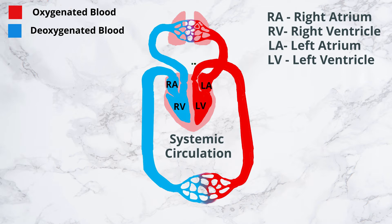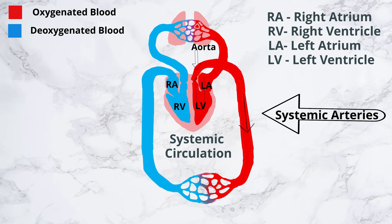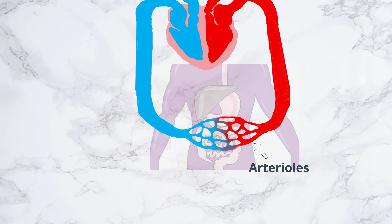First, let us start with systemic circulation. The left side of the heart is the pump for the systemic circulation. It receives bright red oxygen-rich blood from the lungs. The left ventricle pumps blood into the aorta. The oxygenated blood entering the aorta is carried by systemic arteries to all organs throughout the body, except for the air sacs of the lungs, which are supplied by the pulmonary circulation. In systemic tissues, arteries give rise to arterioles which finally lead into extensive beds of systemic capillaries.